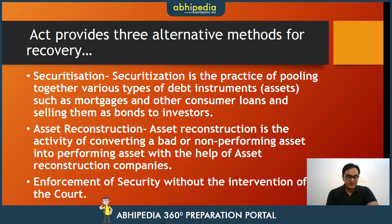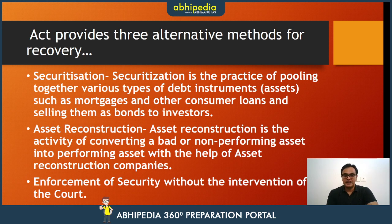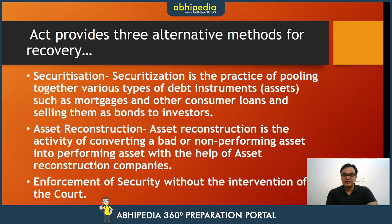Securitization is the practice of pooling together various types of debt instruments such as mortgages and other consumer loans and selling them as bonds to investors. So basically, the bank converts bad assets into a securitized instrument — that is called securitization. Second is asset reconstruction, which is converting a bad or non-performing asset into a performing asset with the help of an Asset Reconstruction Company.